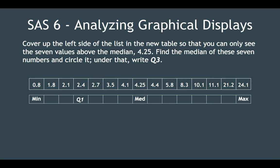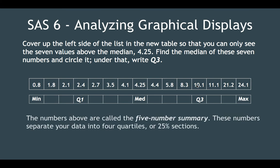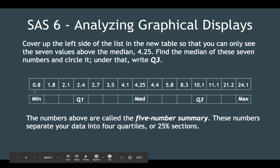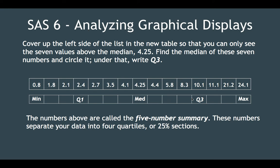Now we're going to cover up the left side and do the same thing with the right side. These seven values have a middle number, and that's 10.1. We'll write that as Q3. These numbers are called the five number summary, and they separate your data into four quartiles or 25% sections. Between the minimum and Q1 is 25% of the values; between Q1 and the median is 25%; between the median and Q3 is 25%; and between Q3 and the maximum is 25%. Q stands for quartile — Q1 separates quartile one from quartile two, and Q3 separates quartile three from quartile four.